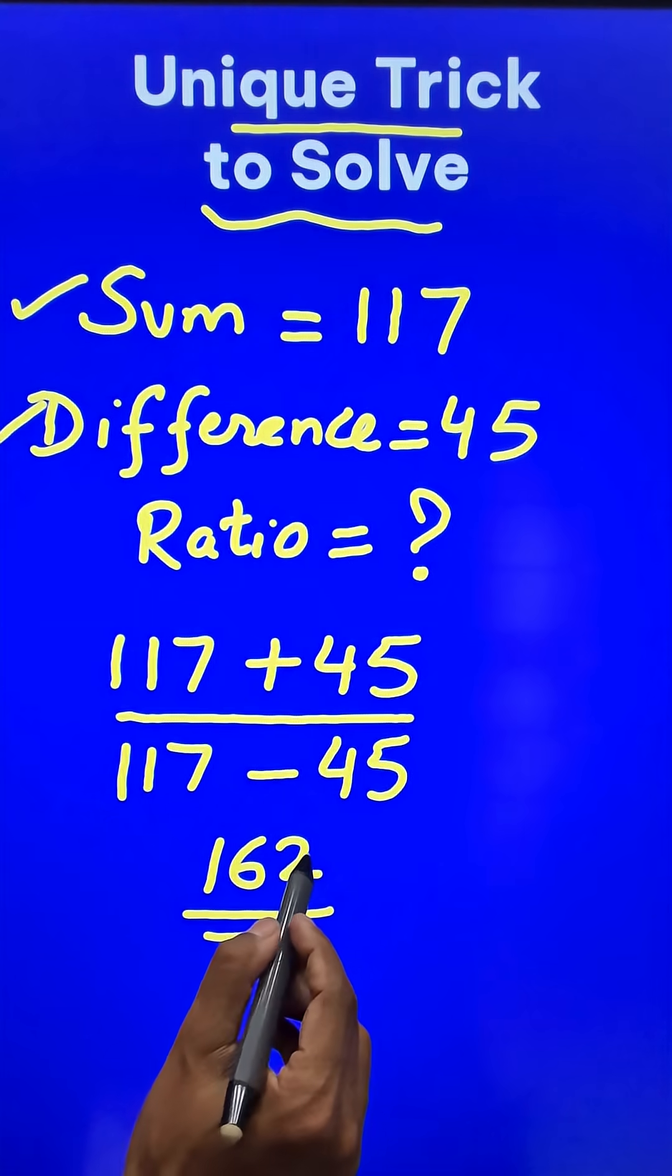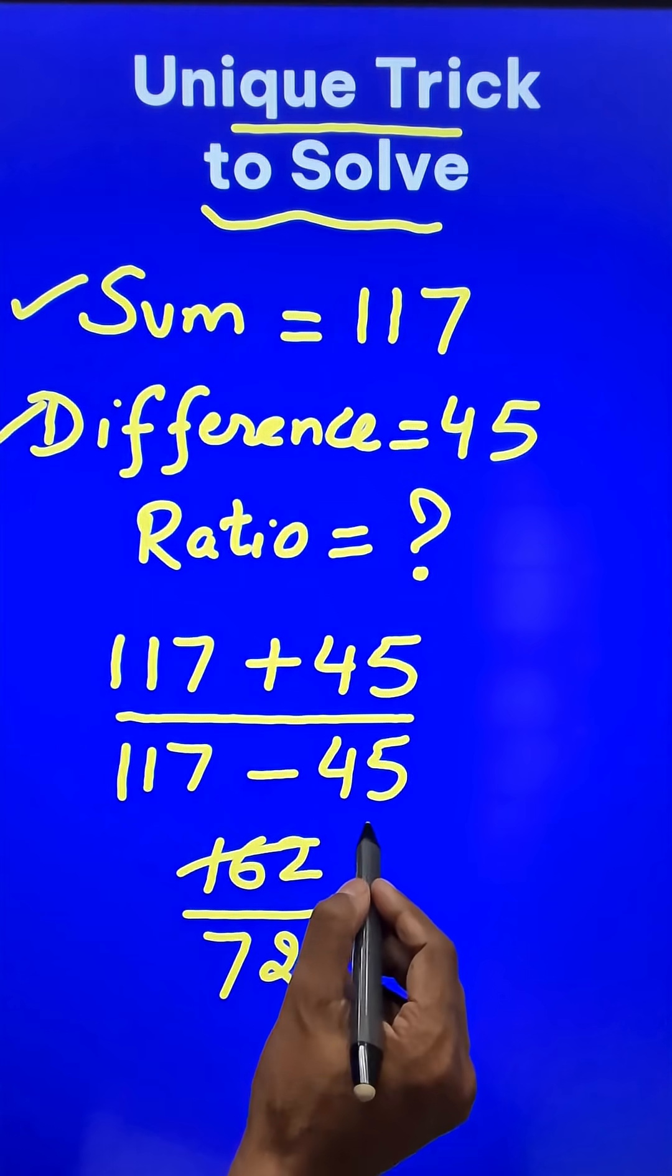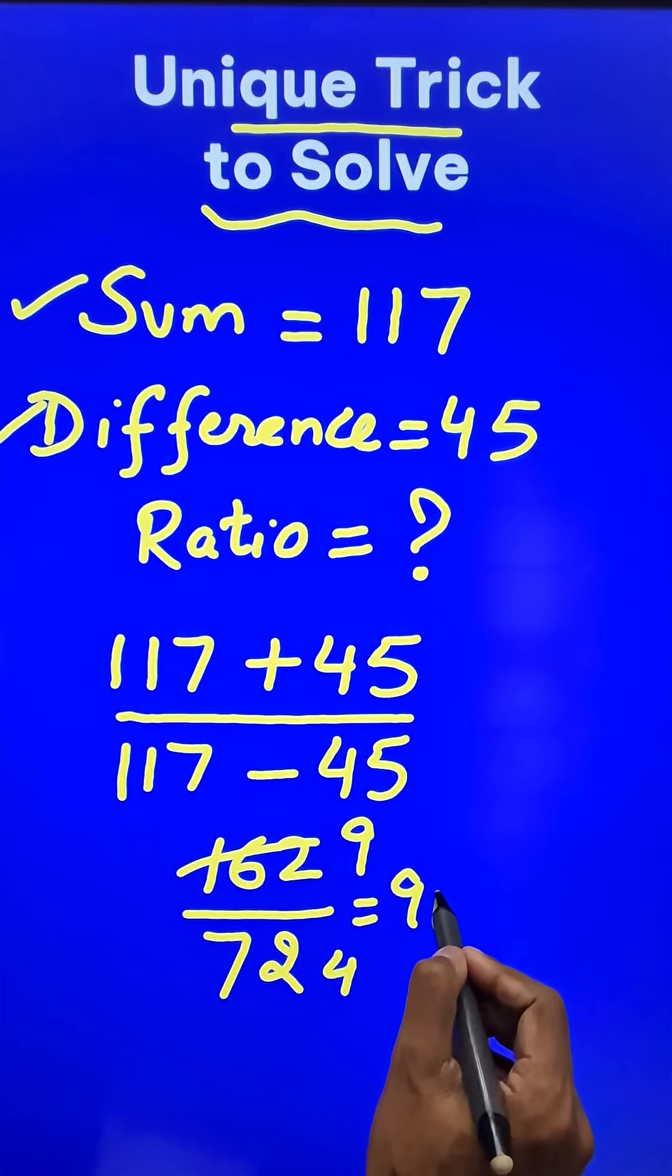Now you can cancel out the common factor. You will get the final answer as 9 by 4 or 9 ratio 4.